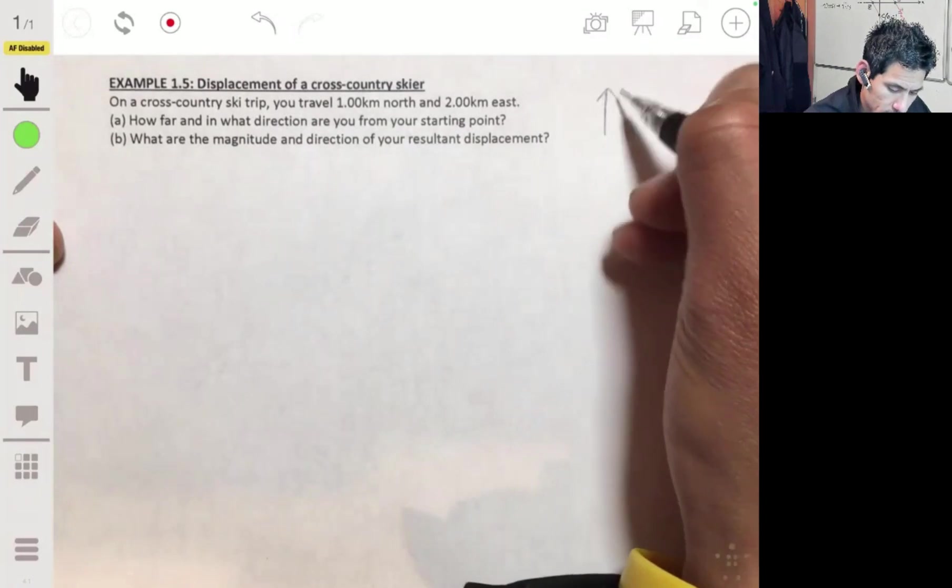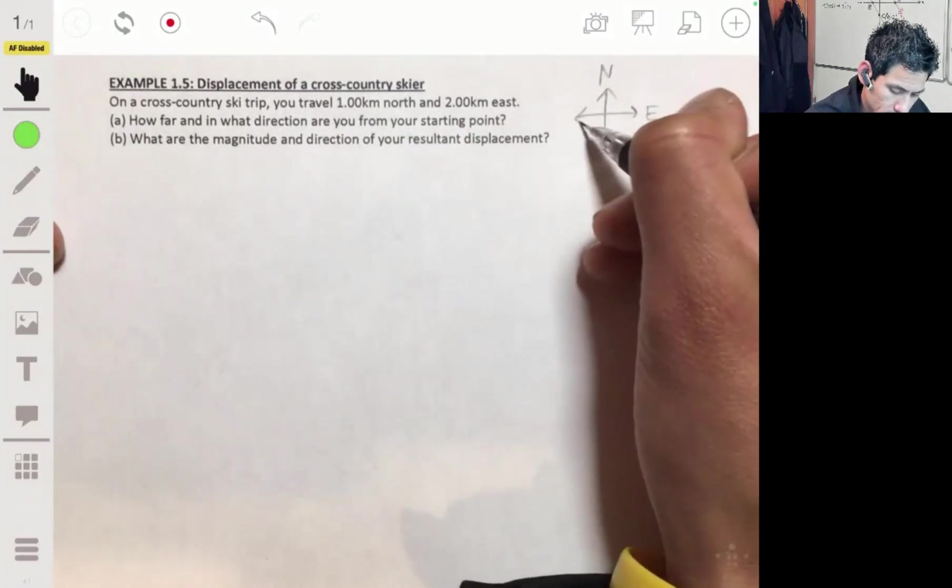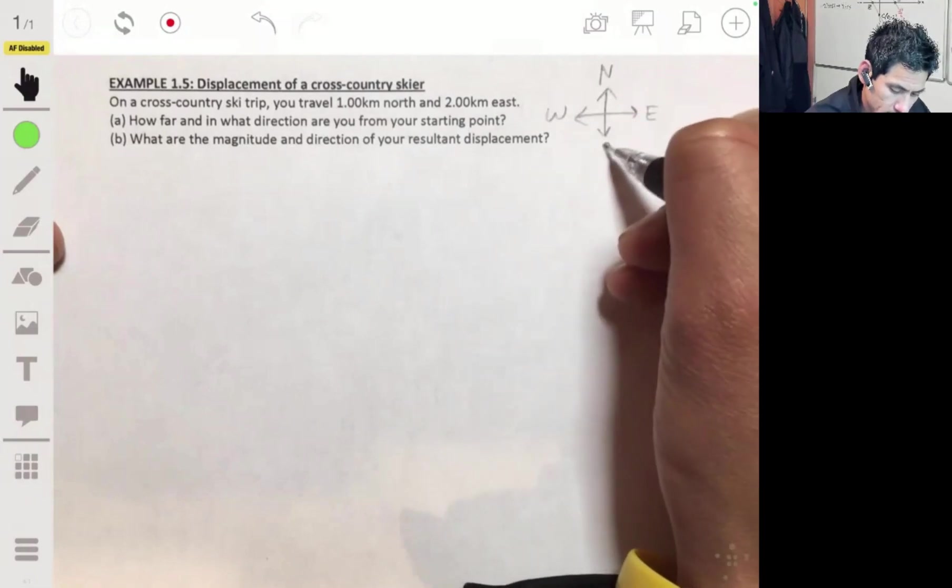Let's draw our compass up here to make sure we know our directions. So up is north, the right east, left west, down south.